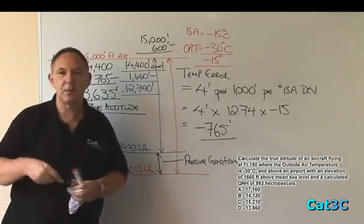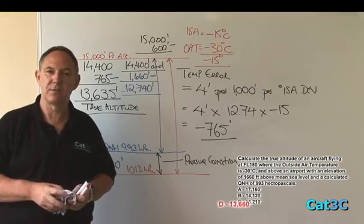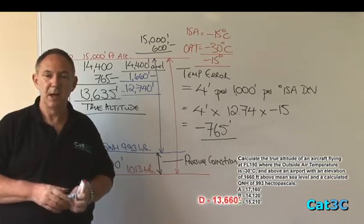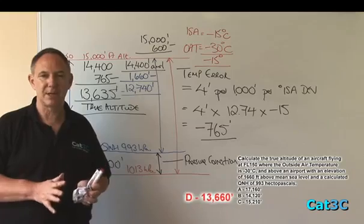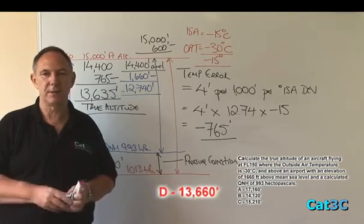Looking at the optional answers, you can see that the only answer close to 13,635 is 13,660. Do not be surprised if you come up with answers slightly different to the examiner. There may be a very slight difference in methodology used.